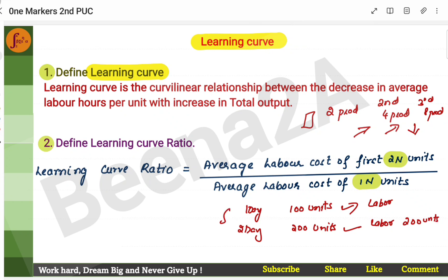This ratio is called as learning curve ratio. So, average labor cost of making first 2N units, that is, double the units by labor cost of initial 1N units. So, this ratio is called as learning curve ratio.